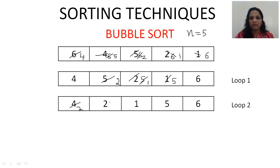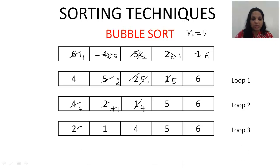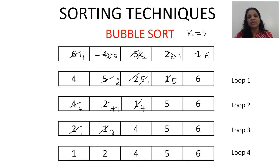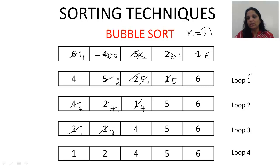In pass 3: compare 4 with 2, so 2 comes here and 4 goes there; then 4 with 1, so 1 comes here and 4 goes there. We don't compare with the last 2 elements because they're already the biggest. Then in pass 4: compare 2 with 1, so 1 comes here and 2 goes there — no more comparisons since the last 3 elements are already sorted. The result of pass 4 is 1, 2, 4, 5, 6 — which is the sorted list.